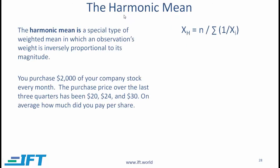Next, we talk about the harmonic mean. The harmonic mean is a special type of weighted mean in which an observation's weight is inversely proportional to its magnitude. Let's look at an example: suppose you purchase $2,000 worth of your company stock every month, and the purchase prices over the last three months have been 20, 24, and 30. On average, how much did you pay per share? The average price paid per share is actually the harmonic mean.